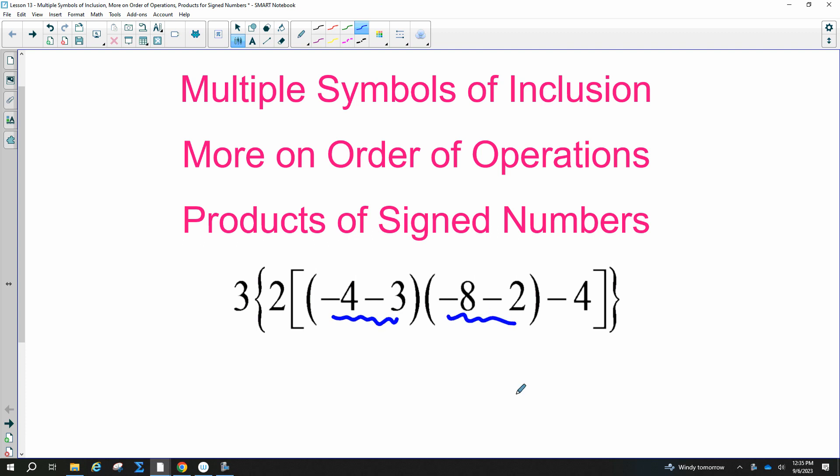So I'm going to rewrite the 3 with the weird bracket parentheses, the 2, then the bracket. And then I need to simplify this right here. So everyone, what is negative 4 minus 3? Yes, you need to keep the parentheses. Don't drop them yet.